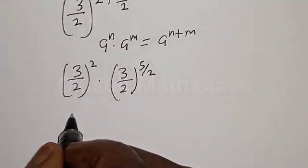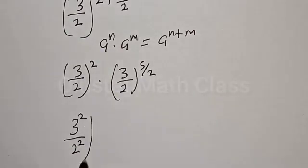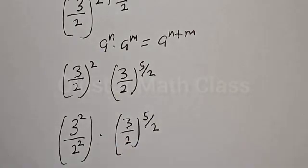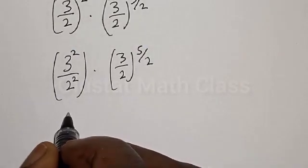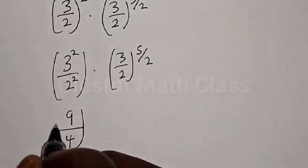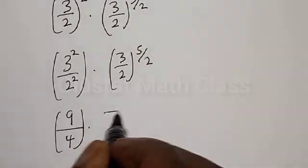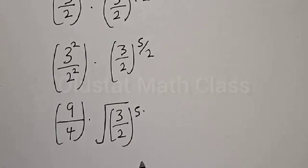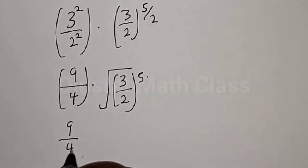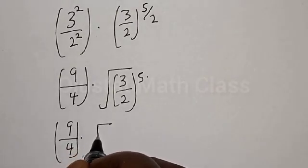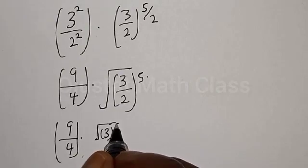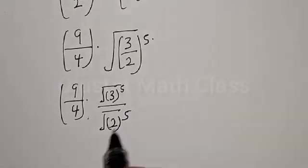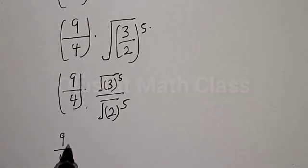We have 3 squared over 2 squared, multiplied by 3 over 2 raised to the power 5 over 2. Therefore 3 squared is 9, and 2 squared is 4, giving us 9 over 4 multiplied by the square root of 3 over 2 raised to the power 5. This expands to 9 over 4 multiplied by the square root of 3 raised to the power 5, over the square root of 2 raised to the power 5.